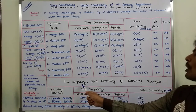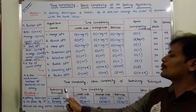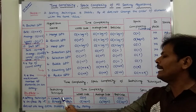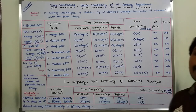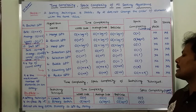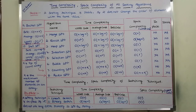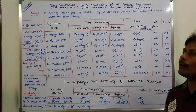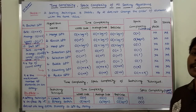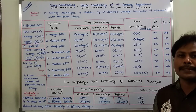Next, the Time Complexity and Space Complexity of Searching Techniques. There are two Searching Techniques: one is Linear Search and the second one is Binary Search. This shows the Worst Case Time Complexity, Average Case Time Complexity, Best Case Time Complexity, and the Space Complexity in Worst Case. This is the Summary of Time Complexity of Various Sorting Algorithms and Searching Algorithms.